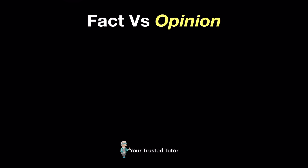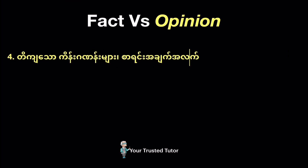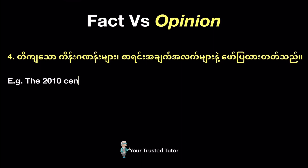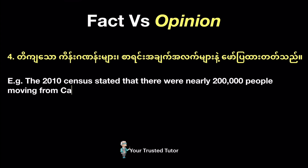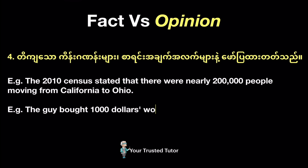Tip number four: a fact usually contains specific numbers, figures, and statistical information to show a valid conclusion. For example, 'The 2010 census stated that there were nearly 200,000 people moving from California to Ohio.' Another example: 'The guy bought $1,000 worth of beer.'